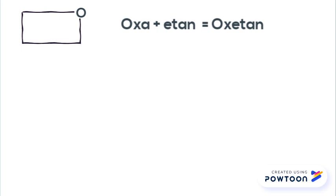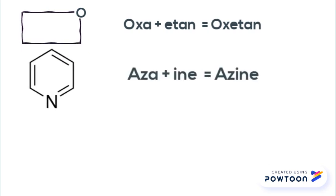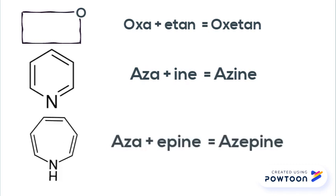So these are various structures. For example: oxa plus etan gives oxetane; aza plus aine gives azine; and aza plus epine gives azepine.